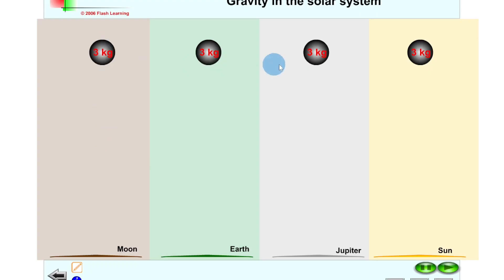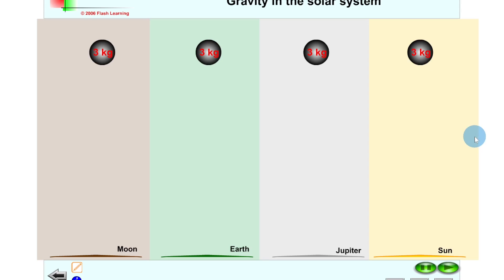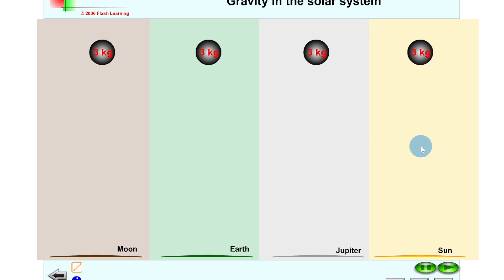Now let's look at a simulation with three kilogram masses above the surface of the Moon, Earth, Jupiter, and the Sun. Gravitational field strength is like a gravitational pull on an object. The Sun has the largest value — 270 N/kg — so it should exert the biggest pull. Jupiter at 23 N/kg is second, then Earth at 9.8 N/kg, and the Moon at 1.6 N/kg should exert the smallest pull.